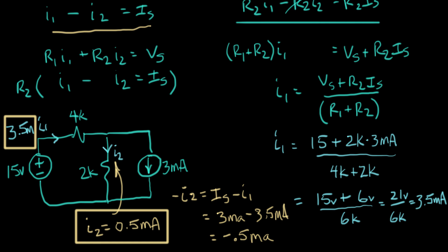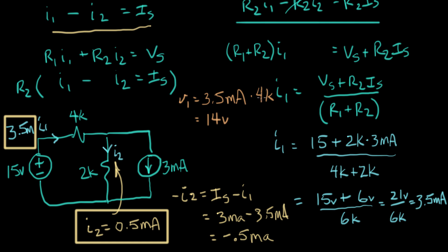Now let's figure out the voltages. Using Ohm's law, the voltage across the 4K resistor is V1 equals I1 times R1, which is 3.5 milliamps times 4K ohms. That equals 14 volts. Note that milliamps times kilohms gives volts, so V1 equals 14 volts.